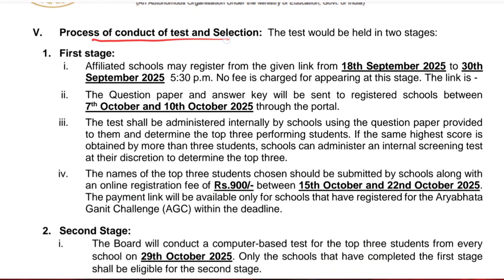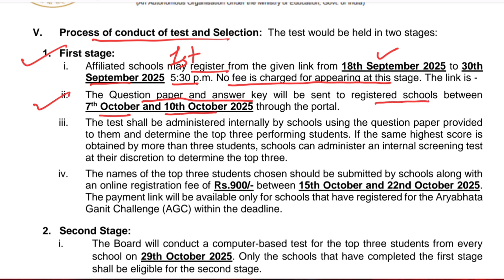Now let's see the process for conducting the test and selection, especially for Stage 1 conducted by school. Schools need to register from the given link — I will add the link in the description as well as in the comment section. Registration starts on 18th September and ends on 30th September, giving you 12 days, with the deadline at 5:30 PM. There is no fees charged to appear for this test. After registration, CBSE will send the question paper and answer key to registered schools between 7th October and 10th October.